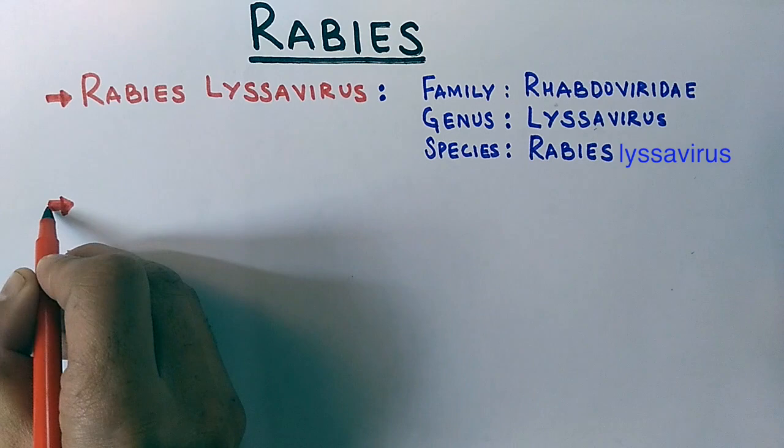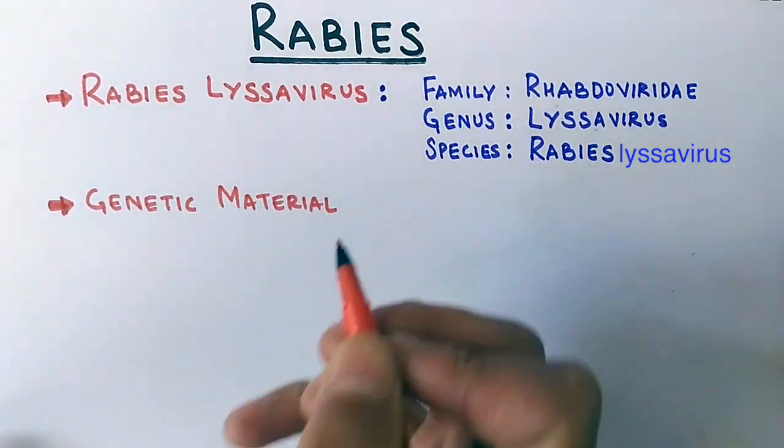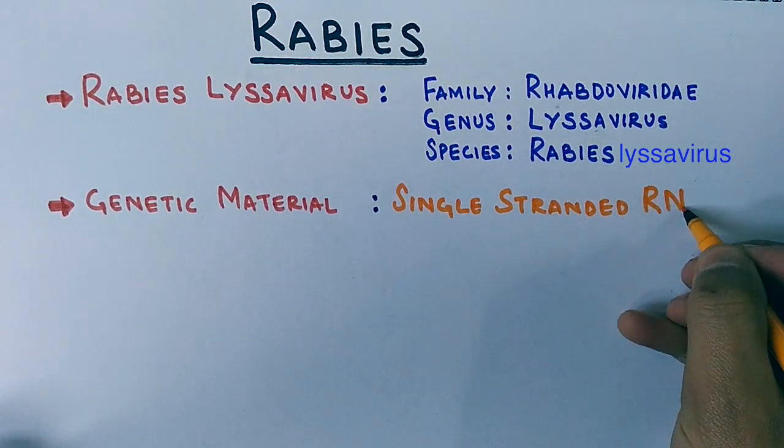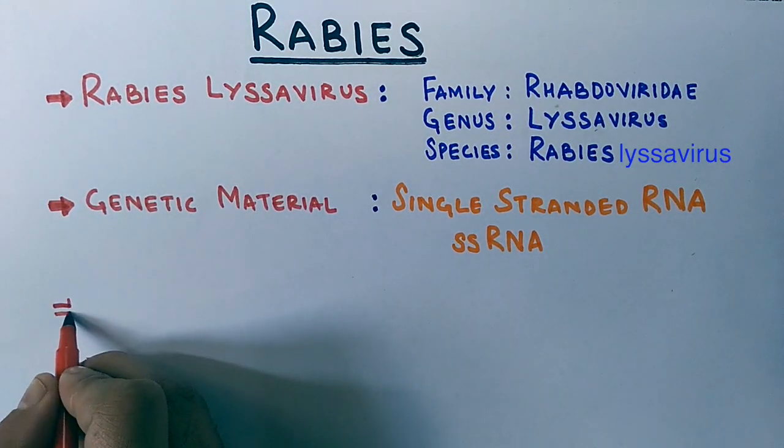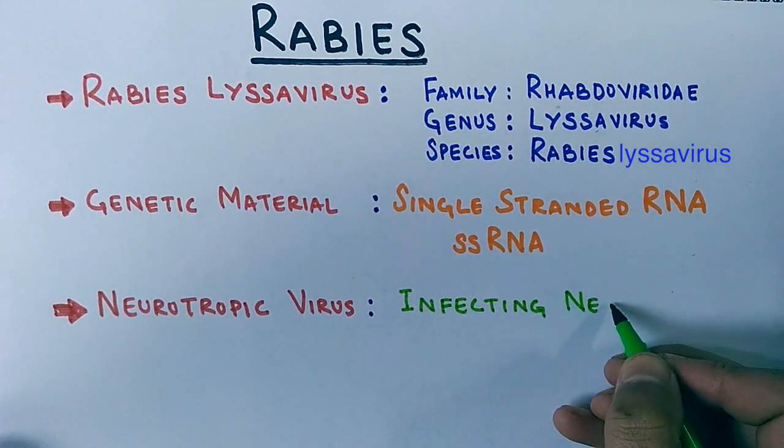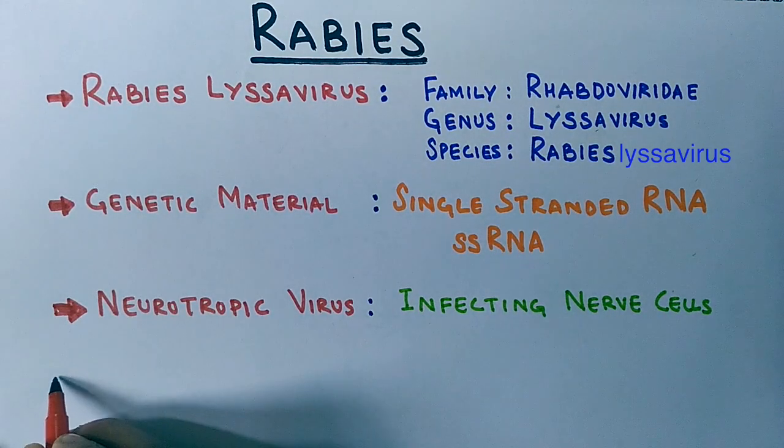Its genetic material is single-stranded RNA that is negatively stranded, and it's a neurotropic virus, which means it infects neural cells, what we call neurons. Its life cycle is zoonotic.